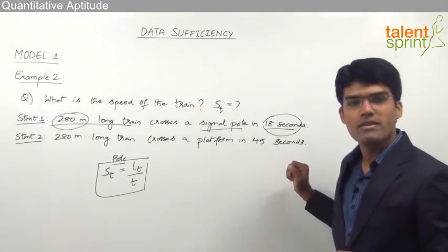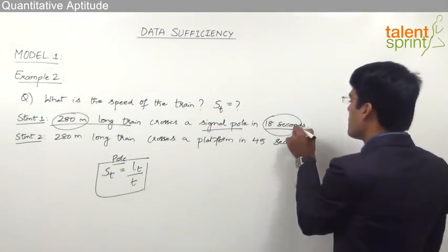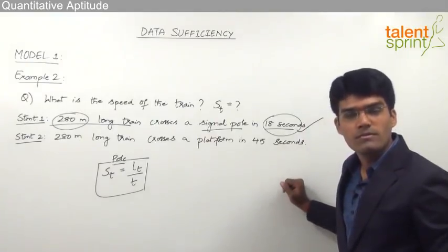So very clearly, Statement 1 alone is sufficient to answer the question. The question asks for the speed of the train, and we are able to find that from Statement 1 alone.